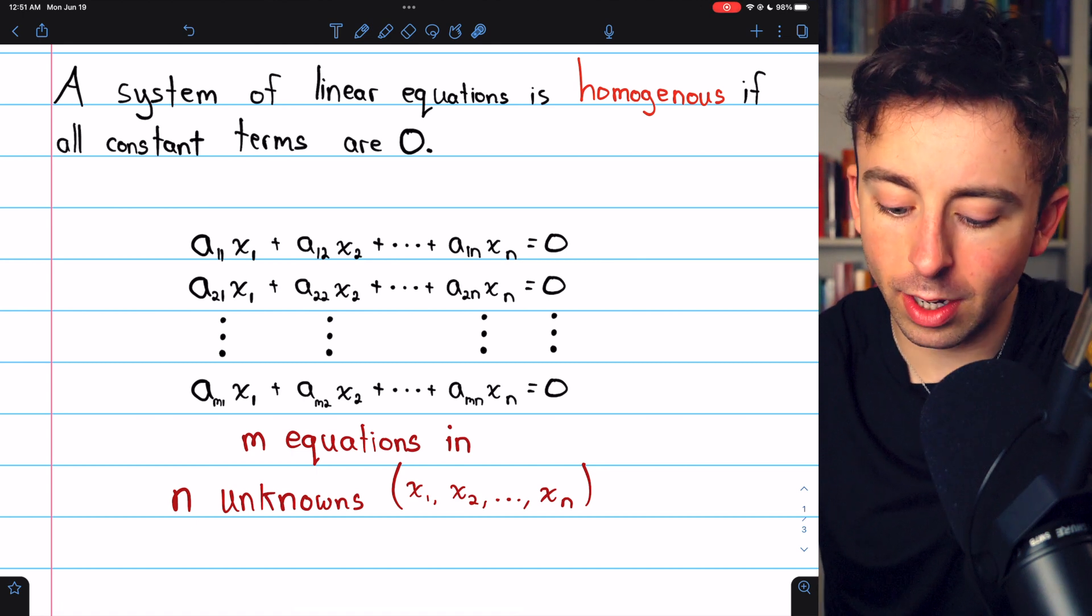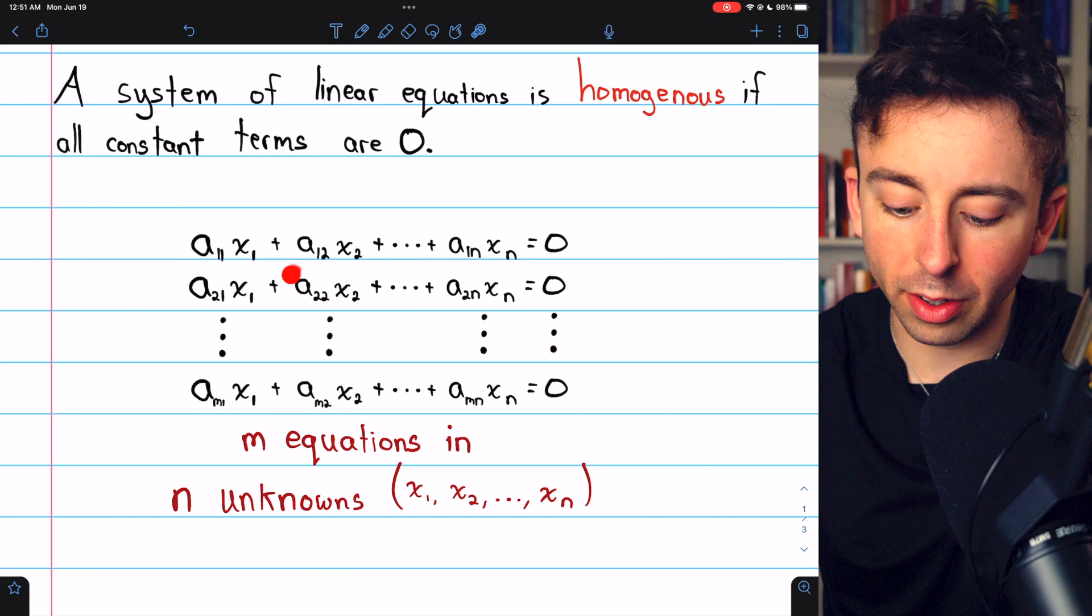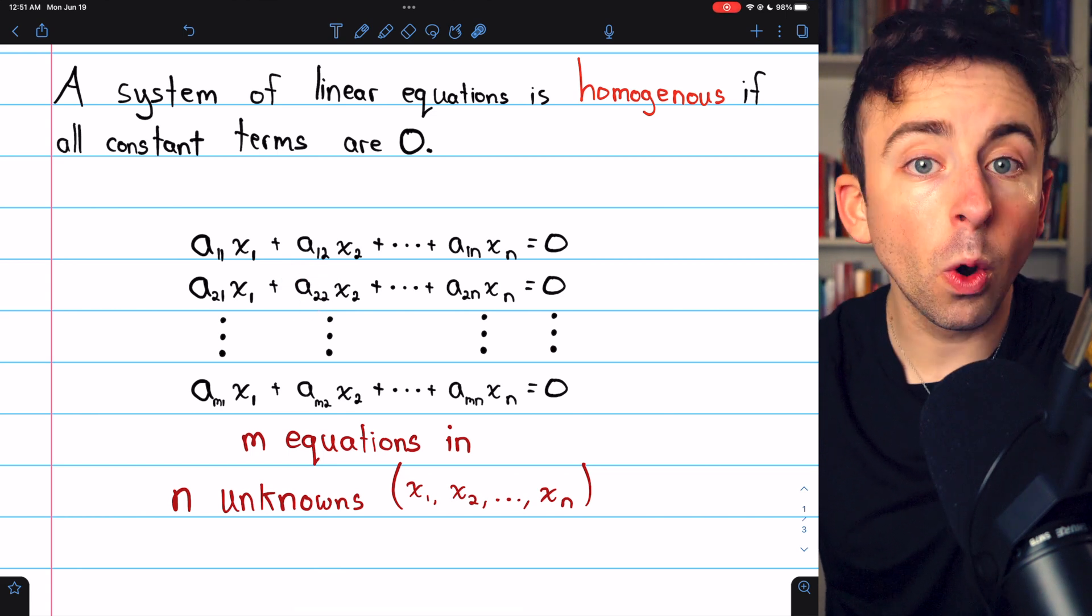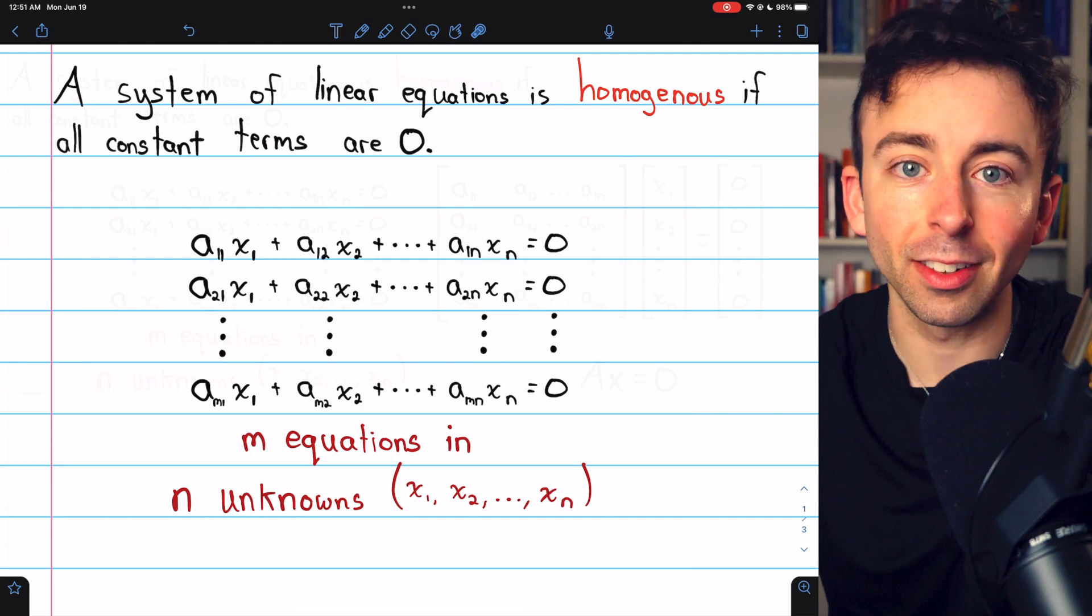And just for an example of the notation, a22, for example, is the coefficient in the second equation corresponding to the second unknown, x2.